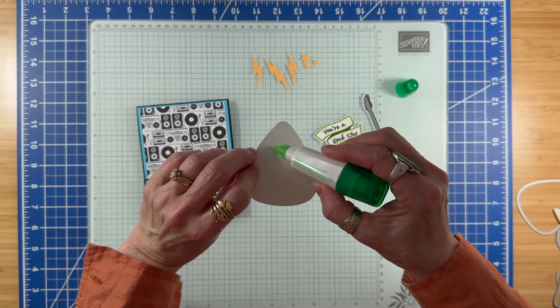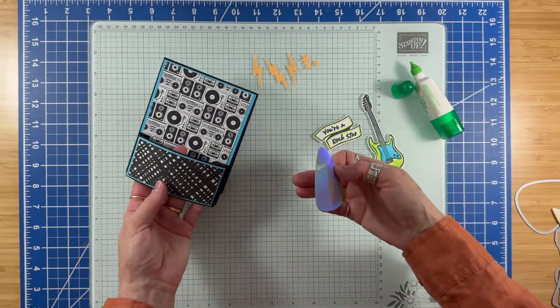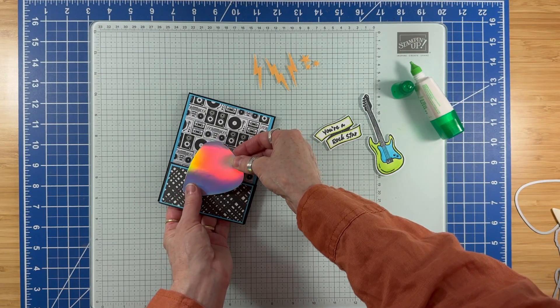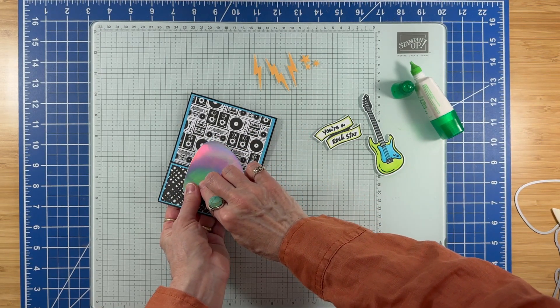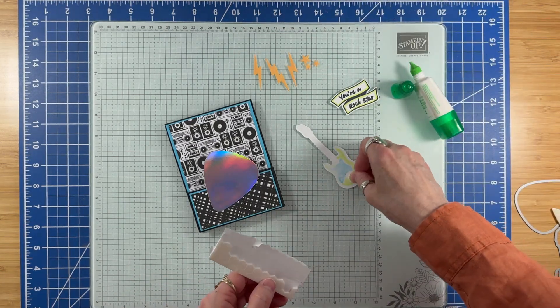I'm putting adhesive just on the bottom of my guitar pick, putting my fingers in here, and angling the guitar pick on the front of the card. The back of the guitar, I'm adding dimensionals.